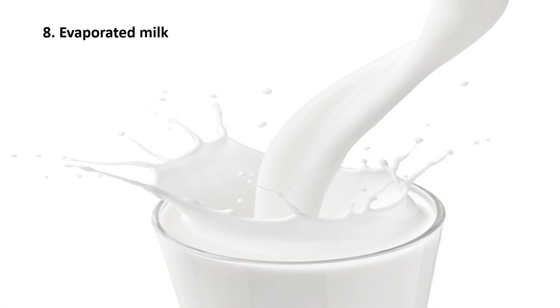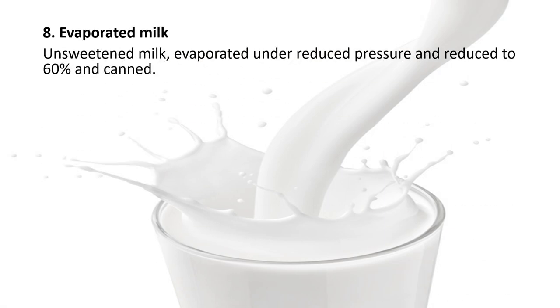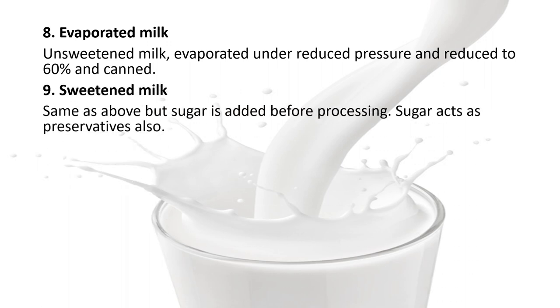Evaporated milk: unsweetened milk evaporated under reduced pressure, reduced to 60% and canned. Sweetened milk: same as above but sugar is added before processing. Sugar acts as a preservative also.